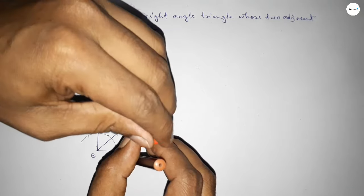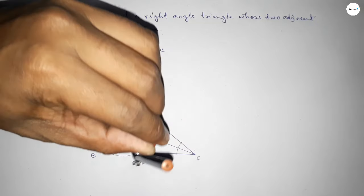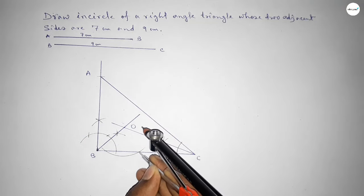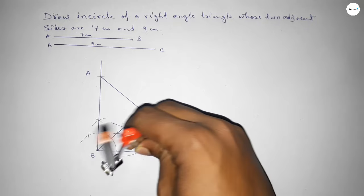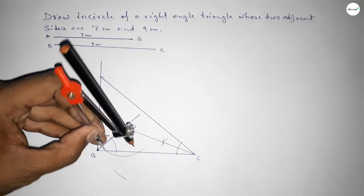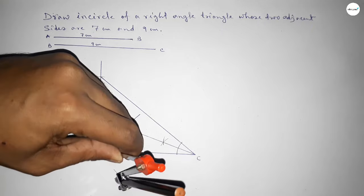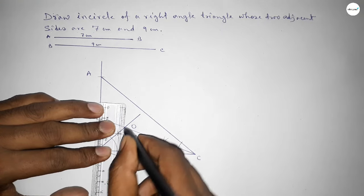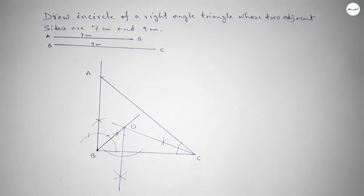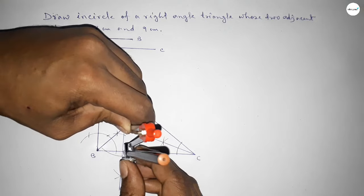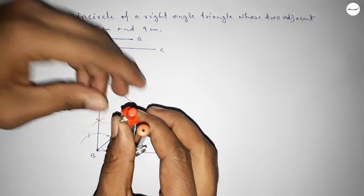Now we have to draw a perpendicular line from O to the BC line. Taking any length and drawing an arc, then placing the compass and cutting arcs on both sides. Both curves intersect at a point; joining this line which meets BC at point D. Now taking the length OD using the compass.